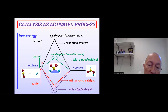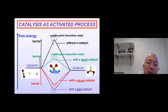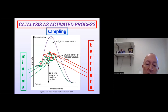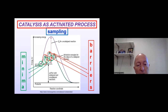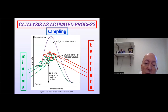Catalysis is also an activated process, so you start from reactants, go through a saddle point, and go to products. There is an energy difference between reactants and products, but what the catalyst is doing is trying to reduce the energy of the saddle point. The sampling problems are: you have to sample local minima, which are the local basins in which the species mostly reside, and also the barriers — the saddle points you have to go through to transform your chemical species.